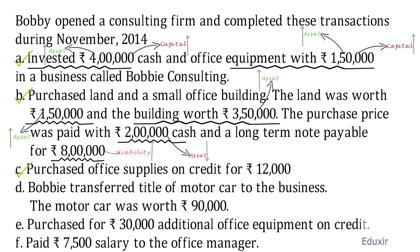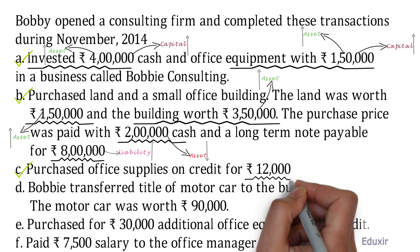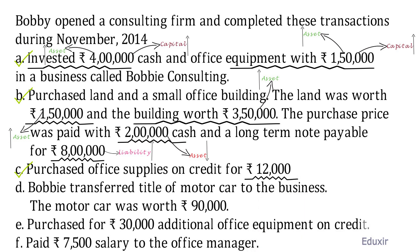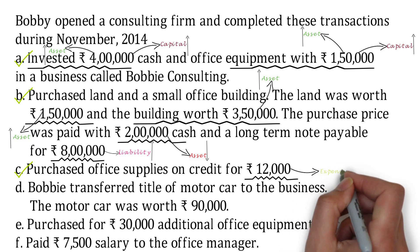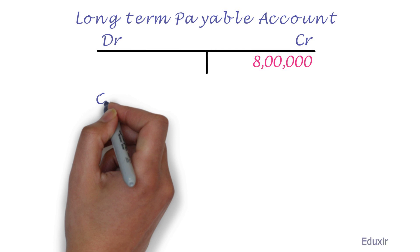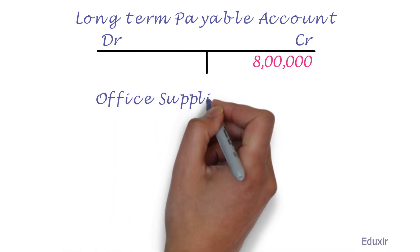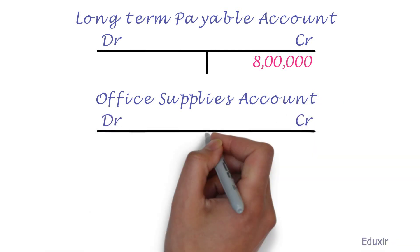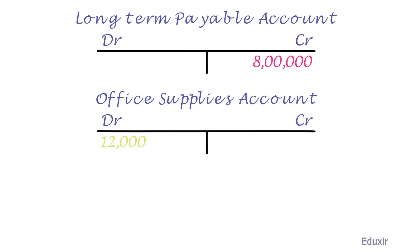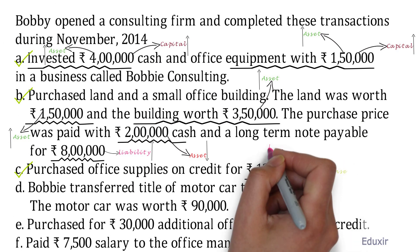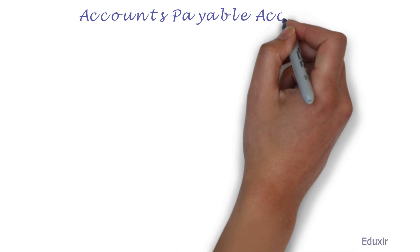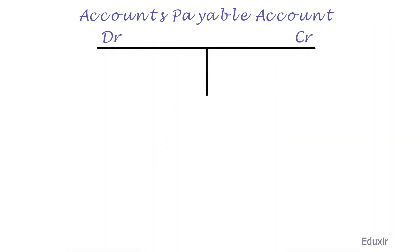Let us now deal with transaction C. In this transaction, 12,000 worth of office supplies are purchased by the business. Office supplies is an expense — it is an expense and not an asset. The rule is to record an increase in the expense by debiting the corresponding expense account. We need to prepare an expense account named office supplies account and add 12,000 rupees on the debit side, and credit 12,000 rupees on the credit side of the accounts payable account. That covers transaction C.